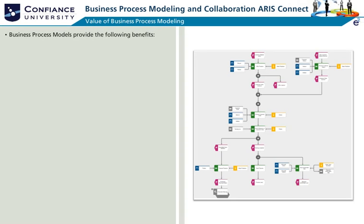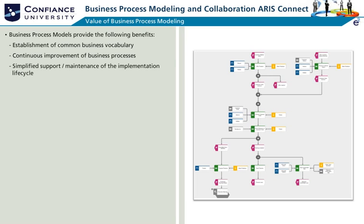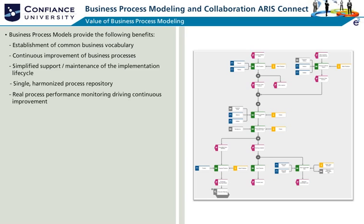The benefits of business process modeling are to establish a common communication medium and provide a foundation for improvement and alignment. It establishes a common business vocabulary, provides the basis for continuous improvement of business processes, simplifies support and maintenance of the implementation lifecycle, provides accessibility to a single harmonized process repository, provides the basis for real process performance monitoring which drives continuous improvement, and represents an integrated view across the enterprise architecture.